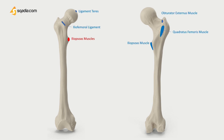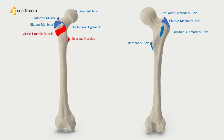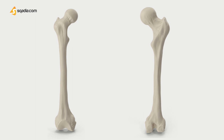The greater trochanter is the site of attachment for many muscles in the gluteal region. These include the gluteus medius, gluteus minimus, and piriformis muscle. There is an exception: the vastus lateralis originates from this site rather than being inserted here. An avulsion fracture of the greater trochanter can occur as a result of forceful contraction of the gluteus medius.